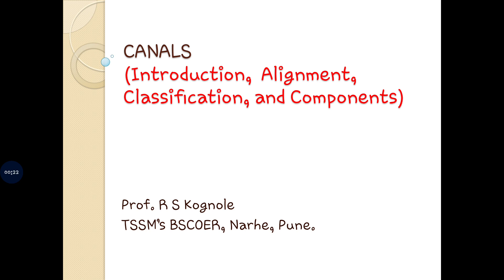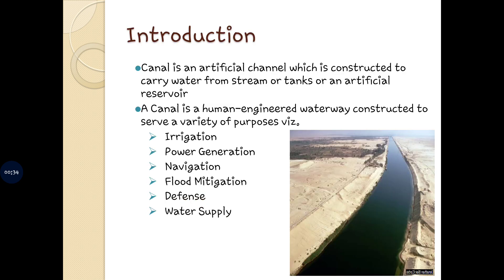Let us understand what is a canal. A canal can be defined as an artificial channel which is used to carry the water from the stream or the tank or an artificial reservoir like dams. The canal can be constructed on the basis of the purpose of use — that is, canal for irrigation, canal for navigation, canal for water supply, canal for power generation, canal for defense, and so on.